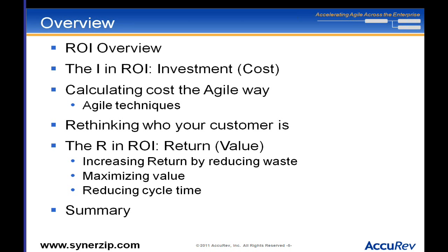Here's the overview: we're going to talk about ROI — what we really mean by it. We'll look at the I in ROI, which is cost, and calculate cost the agile way to see how it's actually easier. We're going to think about who your customer really is, then go back and look at the R part. There are three different ways to produce more value: reducing waste, maximizing value, reducing cycle time. Then we'll bring it all back together.